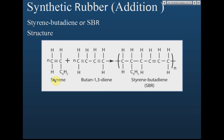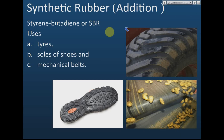For SBR — styrene-butadiene rubber — there are two monomers: styrene and butadiene. Both have double bonds, so through addition reaction they join together to become styrene-butadiene rubber (SBR). SBR is mainly used to make tires, the soles of shoes, and mechanical belts in machines.